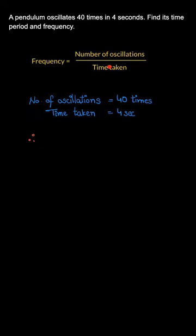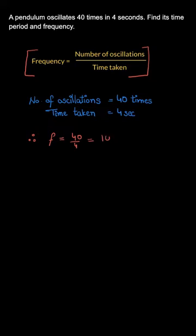The formula is: frequency equals number of oscillations divided by time taken. So we simply put down these values — f equals 40 upon 4. 40 divided by 4 is 10 hertz, so your frequency came out to be 10 hertz.